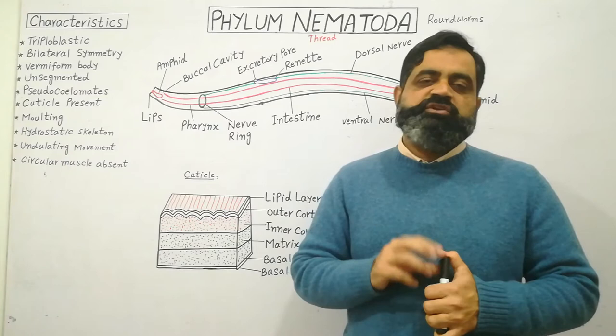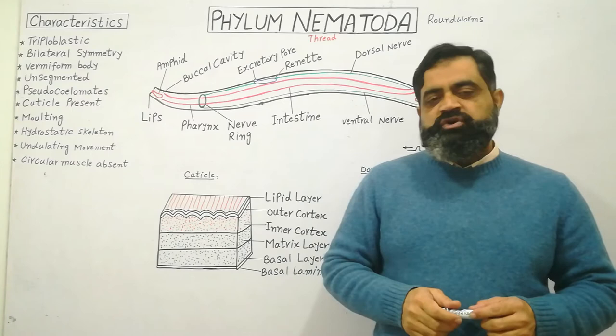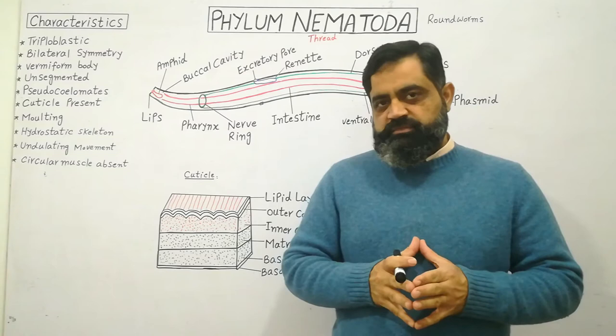They also undergo molting or ecdysis during the juvenile stage. They have a hydrostatic skeleton, as they do not contain bones. A fluid present inside the pseudocoelom acts as a skeleton and provides mechanical support to the animals.